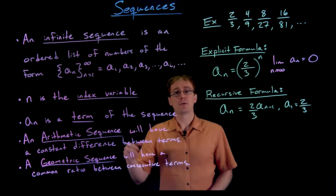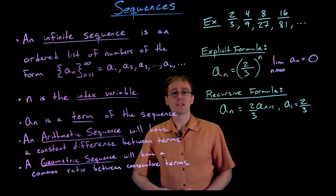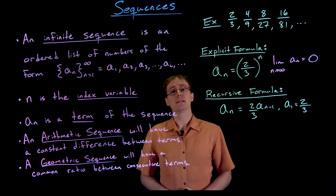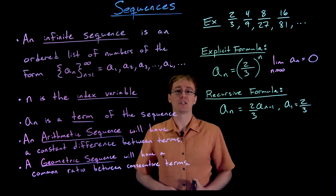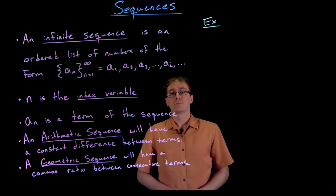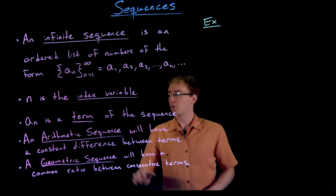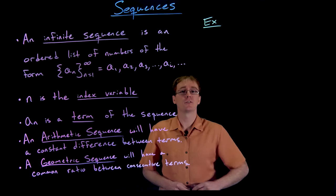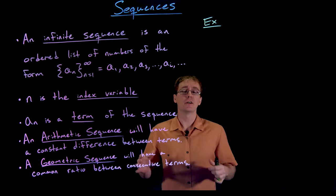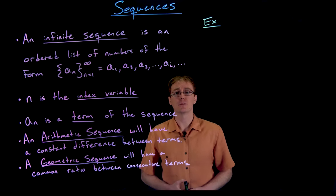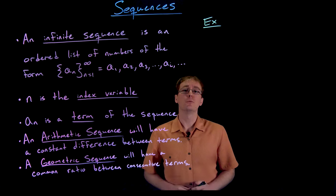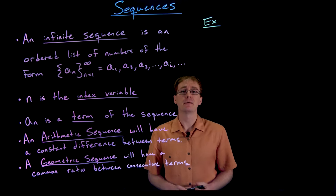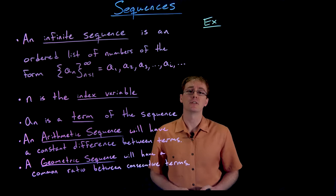So this geometric sequence converges to zero. The previous arithmetic sequence of even integers diverges to positive infinity. Not every sequence is arithmetic or geometric — those are just two very popular and important types we need to know about.